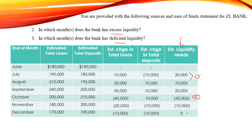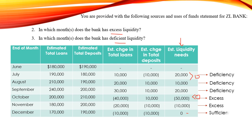In July, August, and September the bank has a deficiency. In October and November the bank has excess liquidity. In December the bank has sufficient liquidity. To answer question two: in both October and November the bank has excess liquidity. To answer question three: in July, August, and September the bank has deficient liquidity.